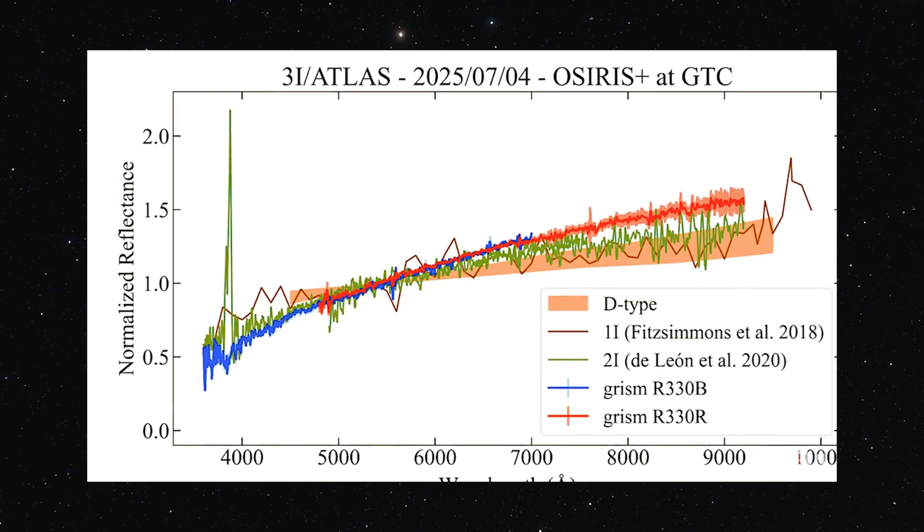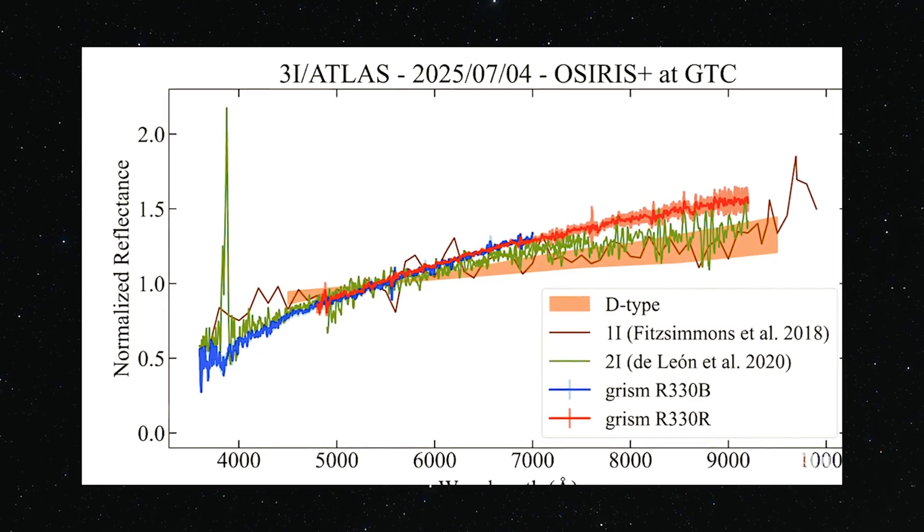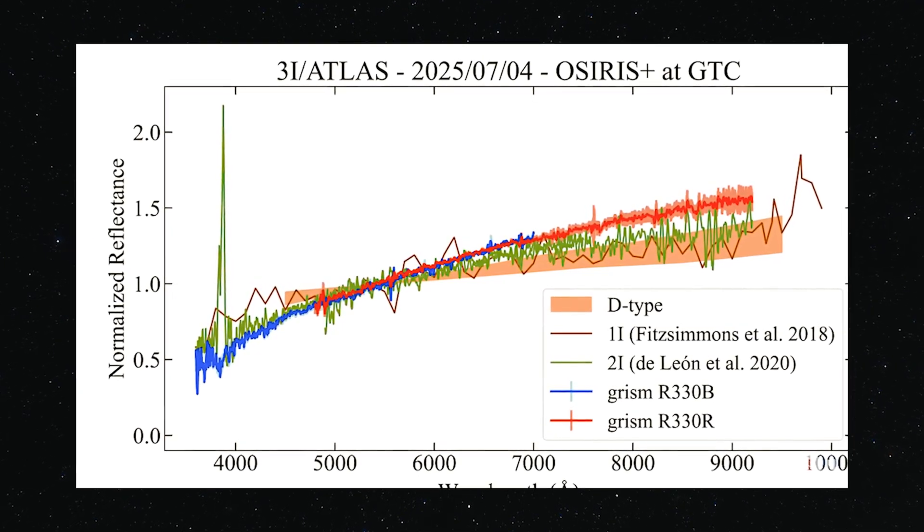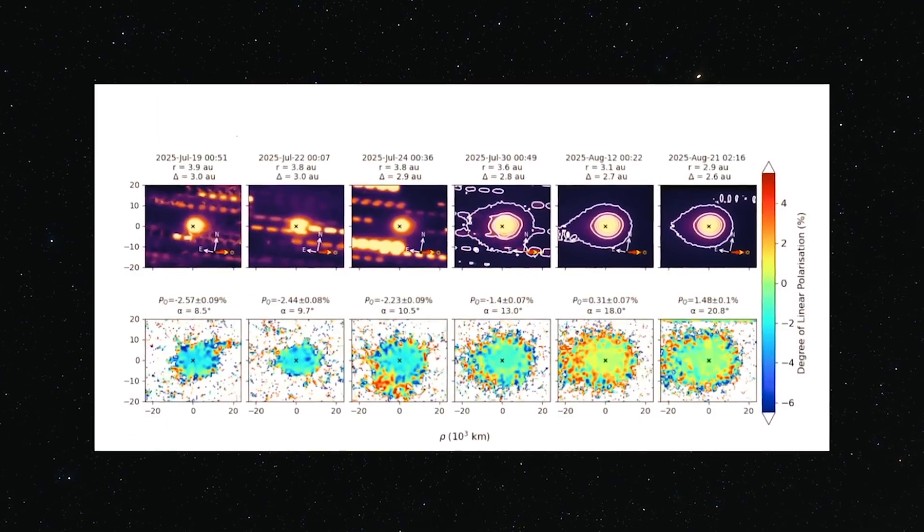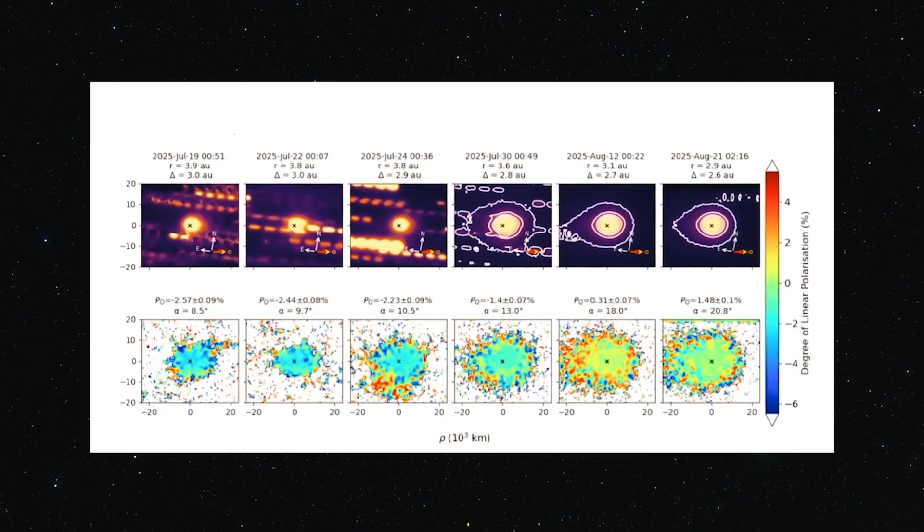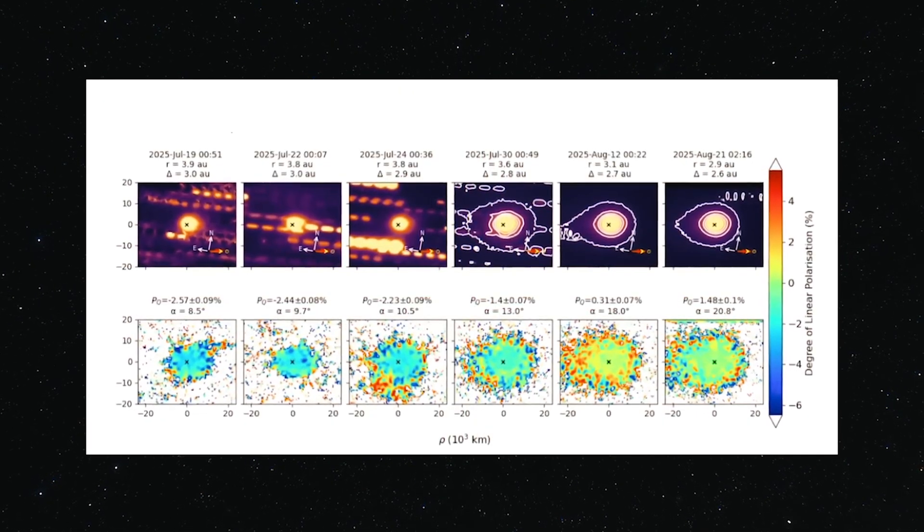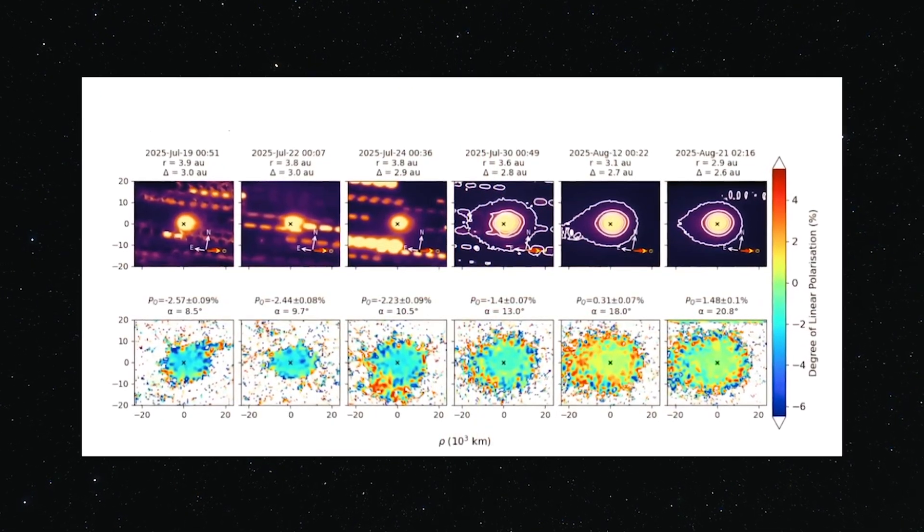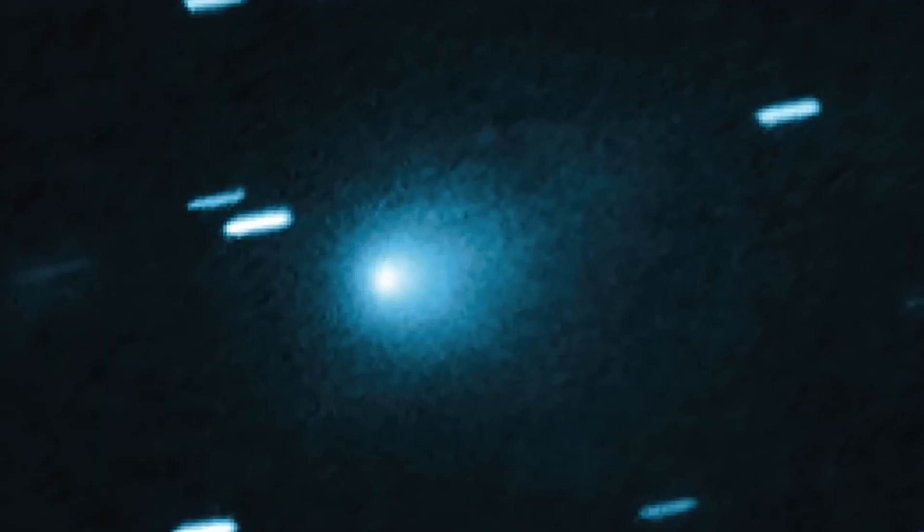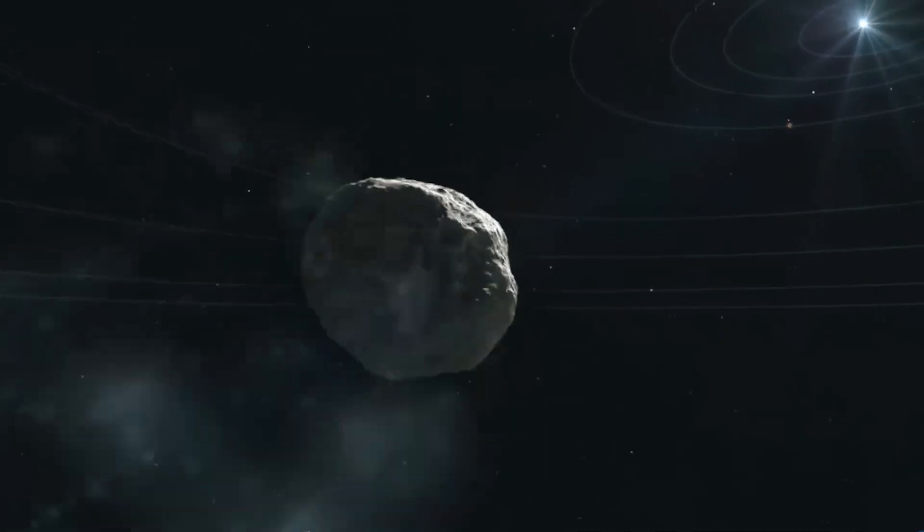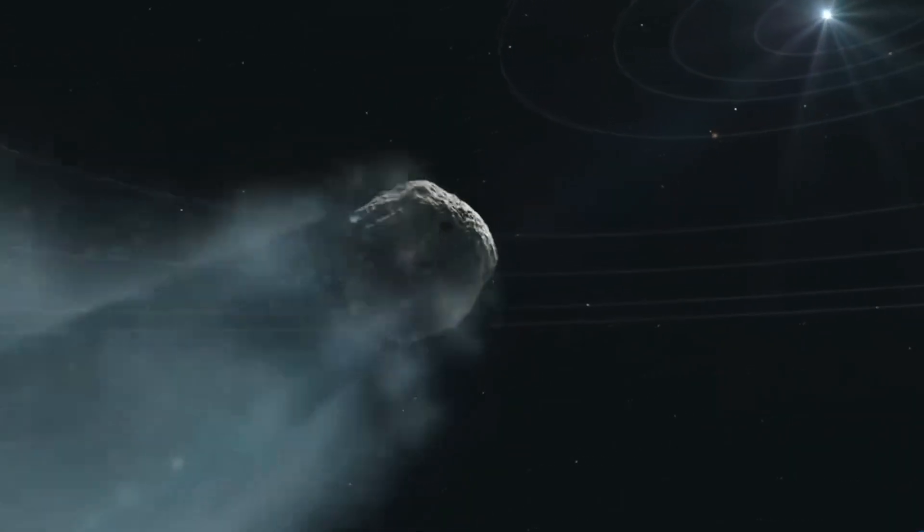Spectral data from ground observatories and the James Webb Space Telescope later revealed even more. The object is venting roughly 40 kilograms of water vapor every second, despite being nearly three astronomical units from the Sun. Whatever 3i Atlas is made of, it's rewriting what we thought we knew about visitors from beyond the stars.